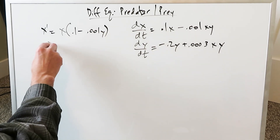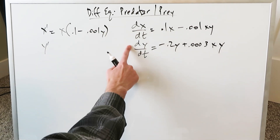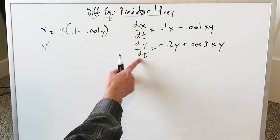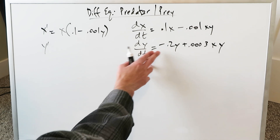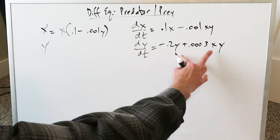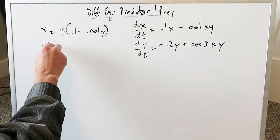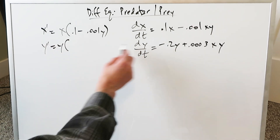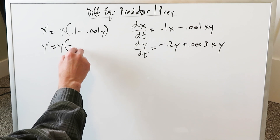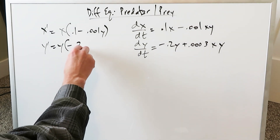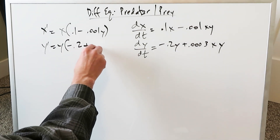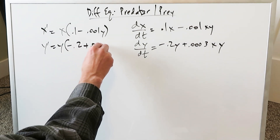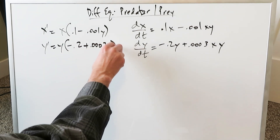Look at the lower equation: y prime, the change in y over time. You can isolate y, and now look at what remains: minus 0.2 plus 0.0003x.